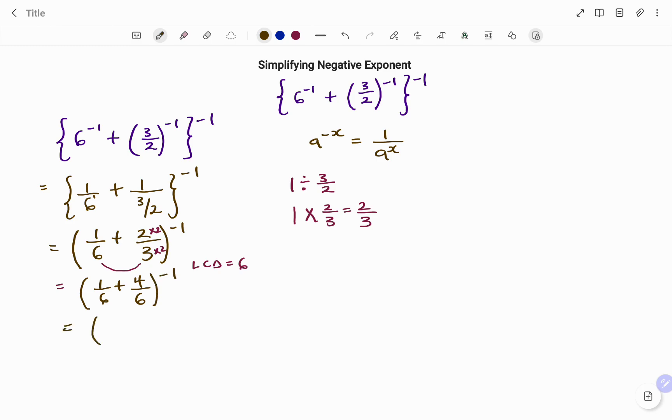Once the denominators are the same, at the top I have 1 plus 4, which is 5 over 6, all to the power of negative 1.